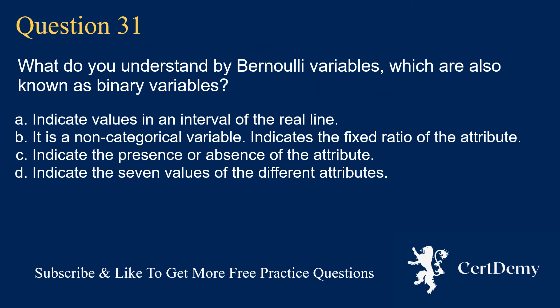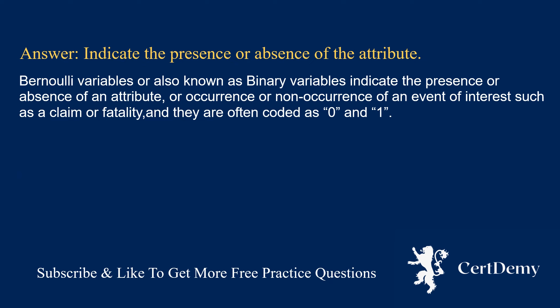Question 31. What do Bernoulli variables, also known as binary variables, indicate? Options: values in an interval of the real line; a non-categorical variable; the fixed ratio of the attribute; the presence or absence of the attribute; seven values of different attributes. The answer is: indicate the presence or absence of the attribute. Bernoulli variables are also known as binary variables and indicate the presence or absence of an attribute, or occurrence or non-occurrence of an event such as a claim or fatality, and they are often coded as 0 and 1.